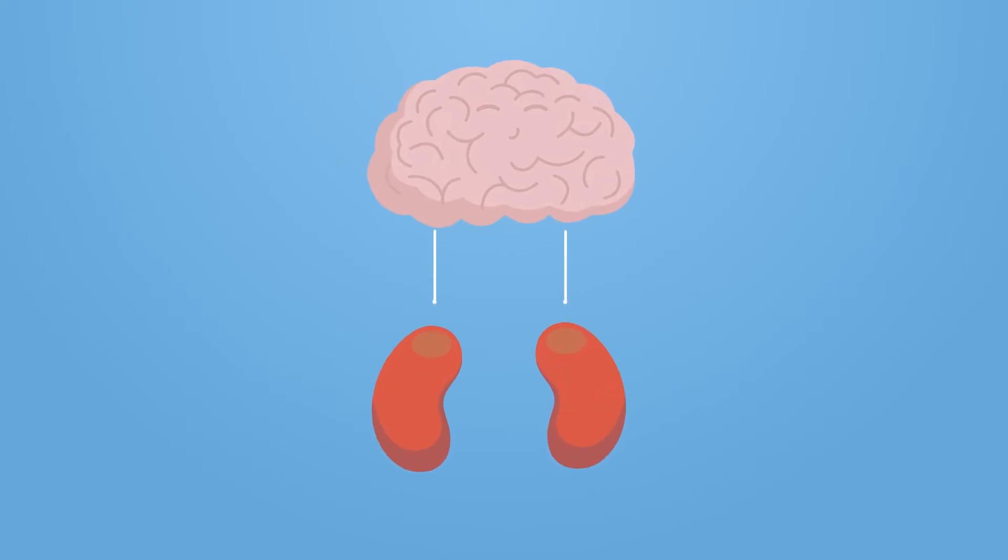Our kidneys work with our brain to help regulate our bodily water content by controlling how much water and salts are reabsorbed, and how much is lost as urine.